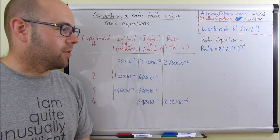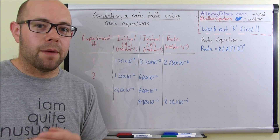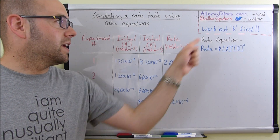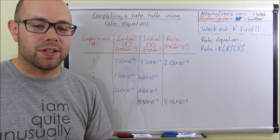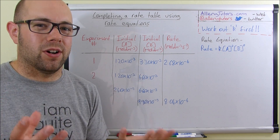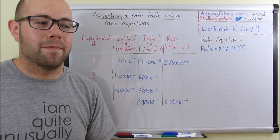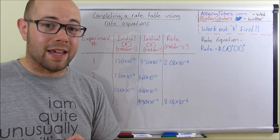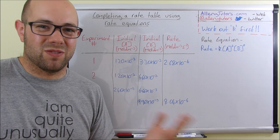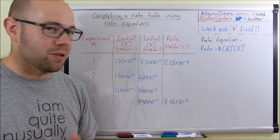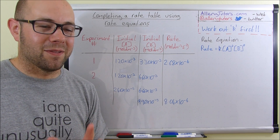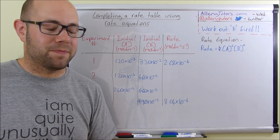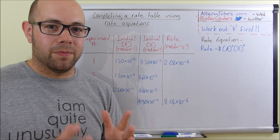We're going to work out what those blank spaces are using a really simple method. The key secret to this is that you have to work out k first. k is the rate constant, and even though it's called a constant it actually varies depending on conditions — it's there to balance the equation, though it does change, which is a little different from constants in physics.